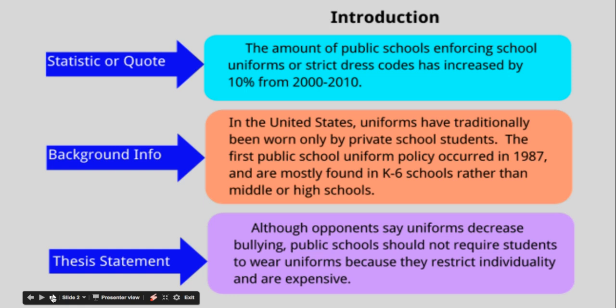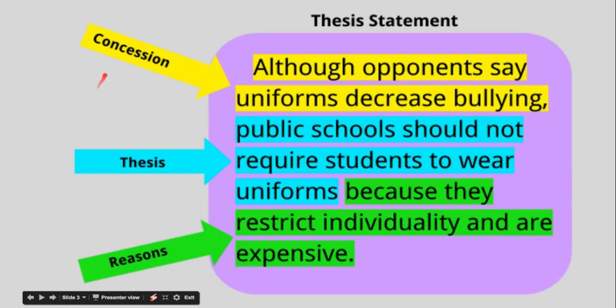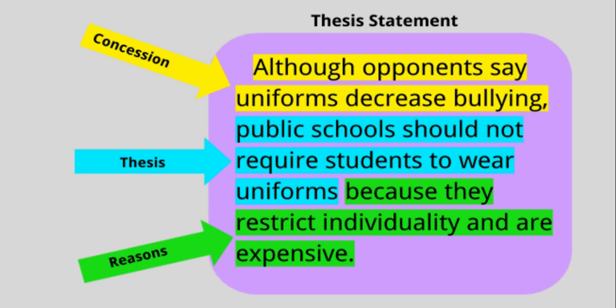Let's look at your thesis statement and break it down a little bit more. In your thesis statement, you should have your concession — what is the opponent's argument — and your key argument. Make sure that you have a comma before you start talking about your thesis. For our class, it's either 'public schools should not require students to wear uniforms' or 'public schools should require students to wear uniforms.' Remember yours is about standards-based grading, but you will either have 'should' or 'should not.' And then finally, we're going to end with our reasons — we're going to have two reasons for this paper. Here's that 'because,' which is a good signal word.